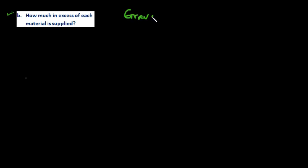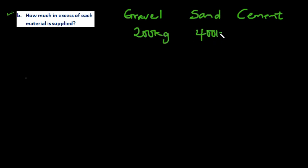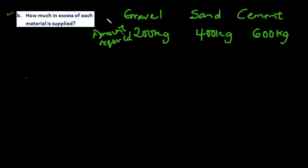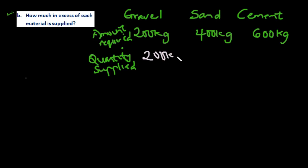Now let's find how much in excess of each material was supplied. We have gravel, sand, and cement. The quantity required is 200 kg, 400 kg, and 600 kg respectively, in ratio 1:2:3. The quantity supplied is 200 kg of gravel, one thousand kg of sand, and one thousand two hundred kg of cement. We are looking for how much in excess of each material was supplied.